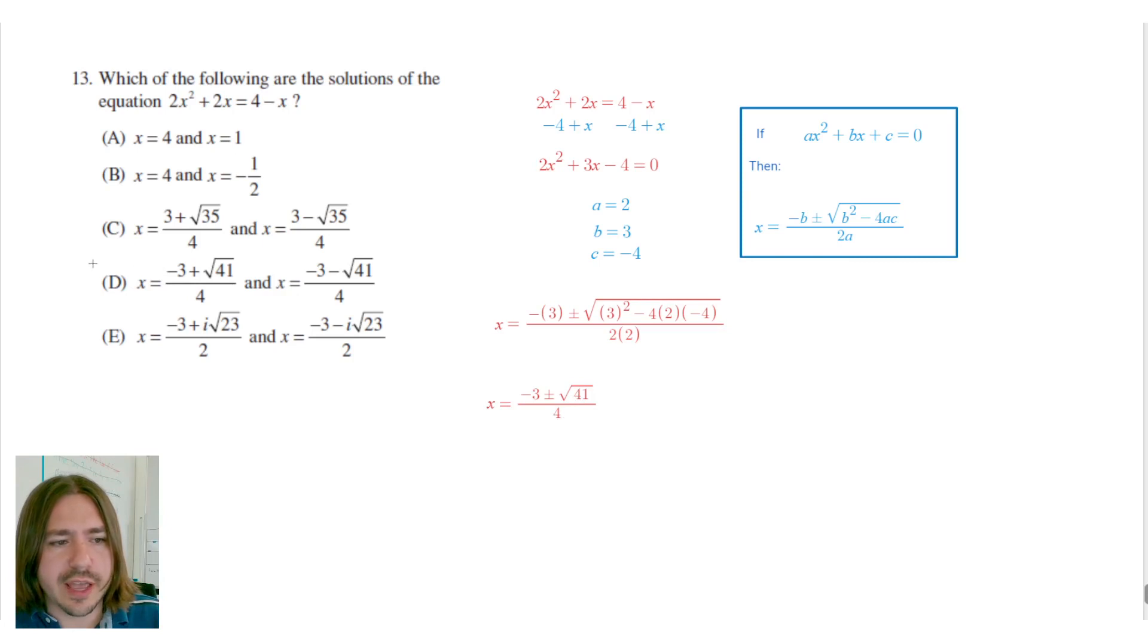So we're going to look at our answer choices and it looks like our answer choice here is d. Negative 3 plus root 41 over 4 and negative 3 minus root 41 over 4. So that's it for number 13. Thanks for watching and y'all have a great day.